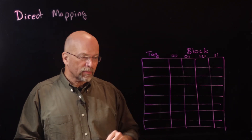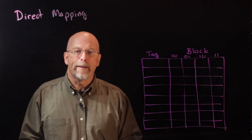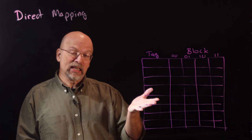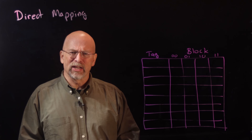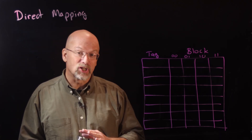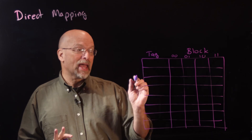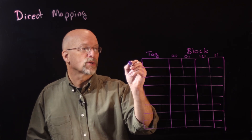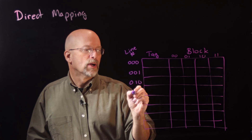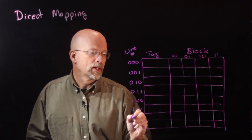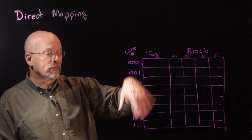Something that's different about direct mapping versus fully associative is that we also have to number all the lines of our cache. I have eight lines here — that's a pretty small number. I worked with a MIPS processor that had 32 lines, and that's the smallest cache I've ever worked with. Let's just stick with eight and number them in binary, starting from zero: 000, 001, 010, 011, 100, 101, 110, 111 — all possible combinations to identify the lines.